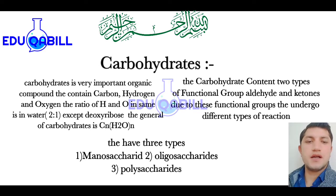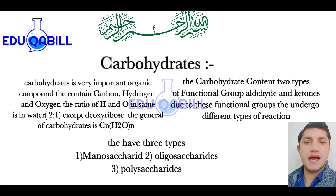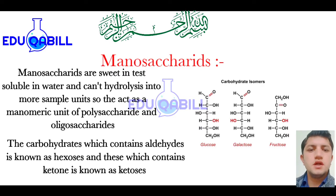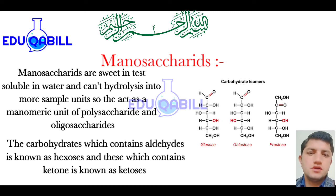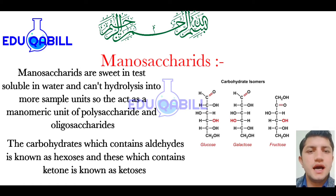Due to these two functional groups, carbohydrates can undergo different types of reactions. Carbohydrates are also classified into three categories: the first one is monosaccharide, the second one is oligosaccharide, and the third one is polysaccharide. Monosaccharide is a very simple sugar — a very simple type of carbohydrate. They cannot be hydrolyzed into more simple sugars.